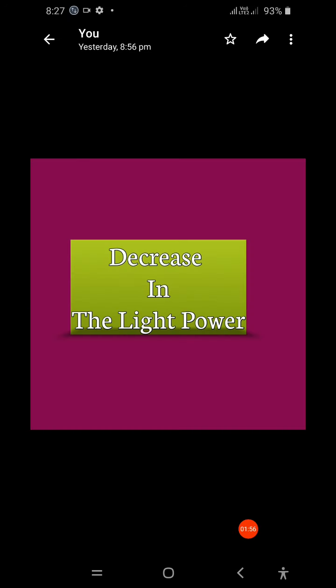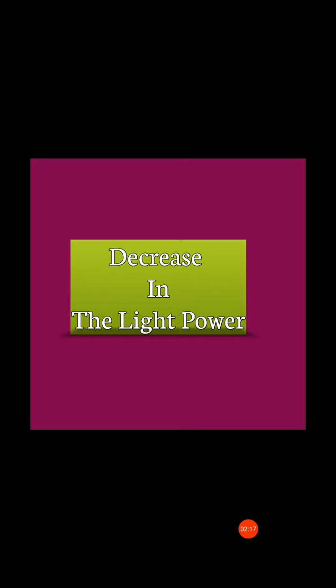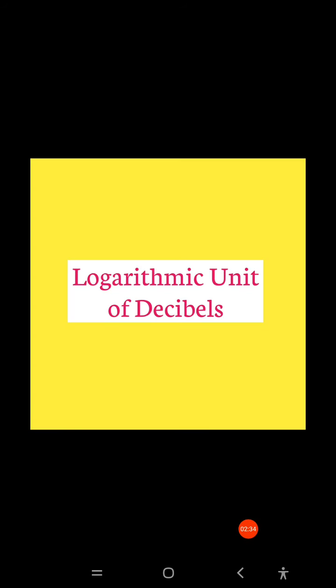In terms of fiber optical communication systems, attenuation can be defined as the decrease in light power during light propagation along an optical fiber. The signal attenuation within an optical fiber is expressed in the logarithmic unit of decibels.